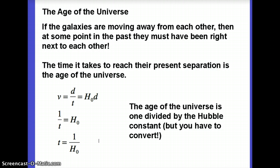What are the distances and times here? The distance is how far apart the galaxies are today, and the time is how long did it take them to get there. Well, that's the age of the universe. So the age of the universe is 1 divided by the Hubble constant.